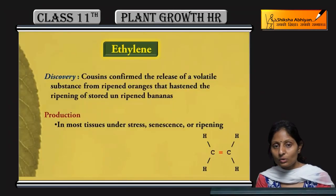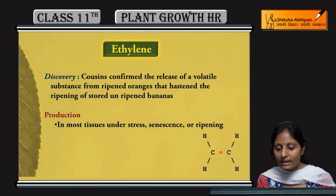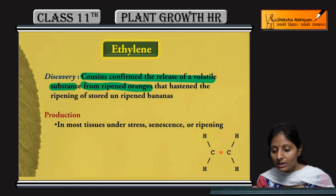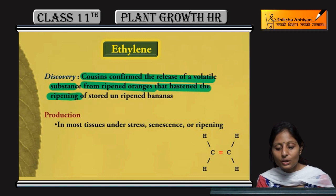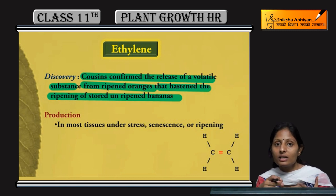The next plant regulator is ethylene. Its discovery was a chance discovery — just like all other hormones discovered by chance. Ethylene was discovered through the release of a volatile substance from ripened oranges that caused the ripening of stored unripened bananas.